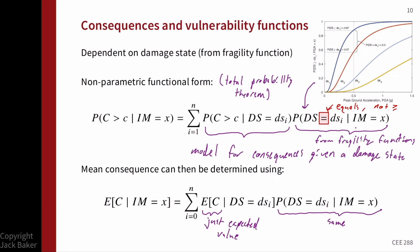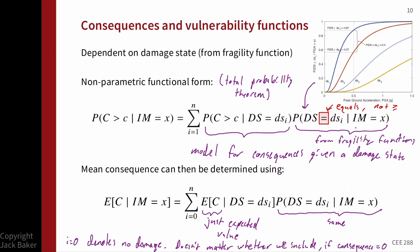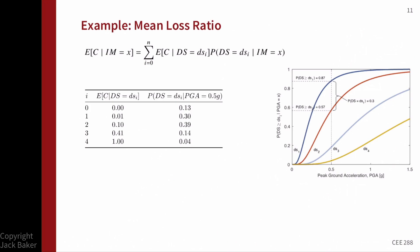Briefly, the summation index can start at i equals zero or i equals one. Typically i equals zero denotes no damage, and since the expected consequences or probability of exceedance of consequences is zero for no damage, that term zeros out. So whether we include i equals zero or start at i equals one, the numerical result is equivalent — you'll see both conventions.